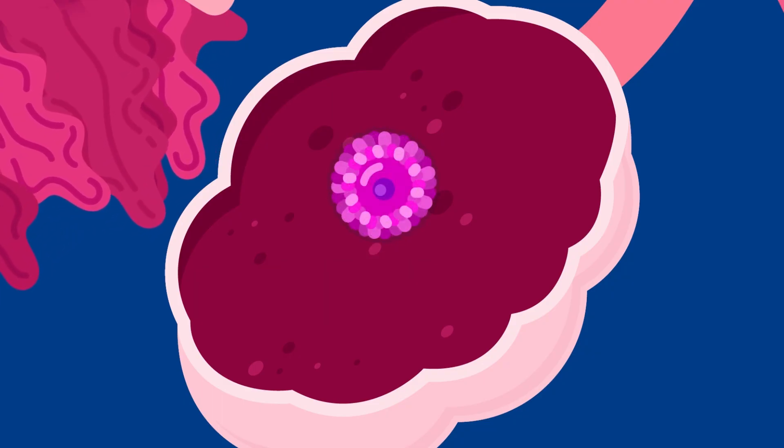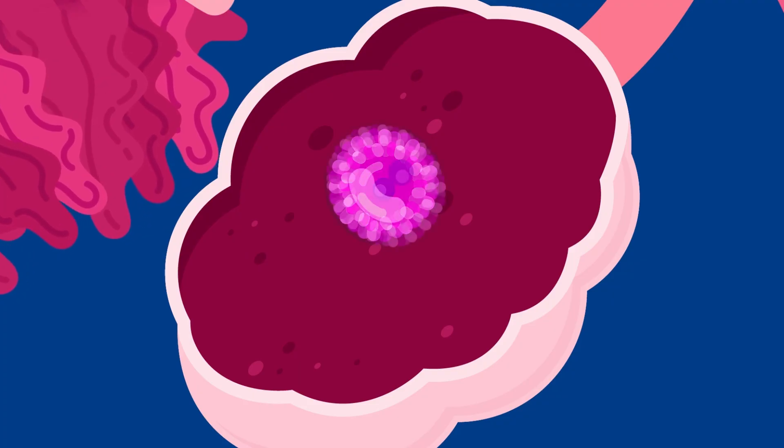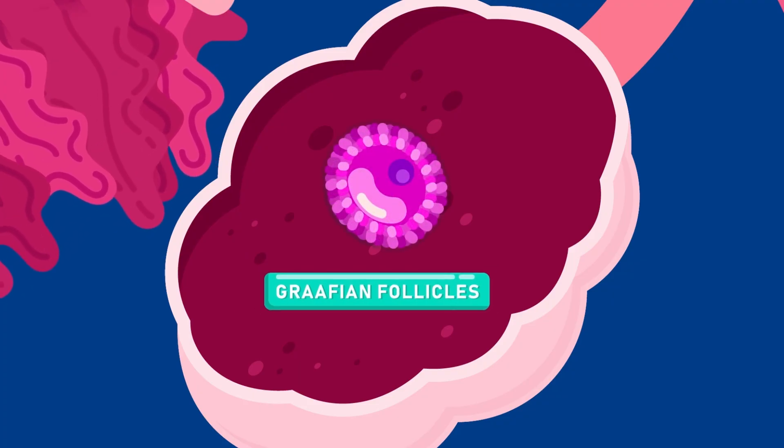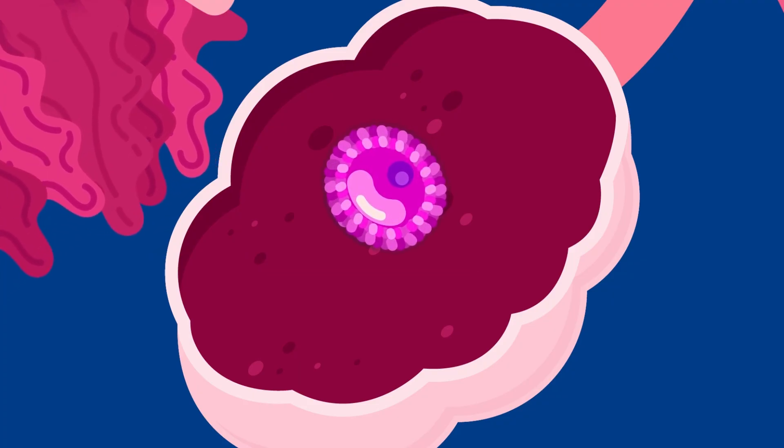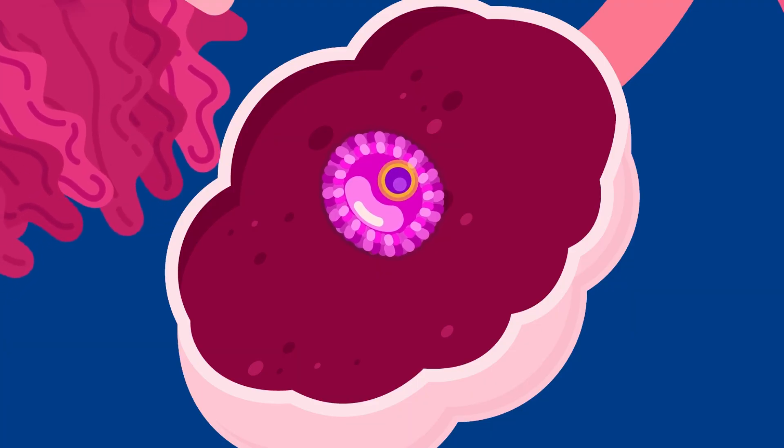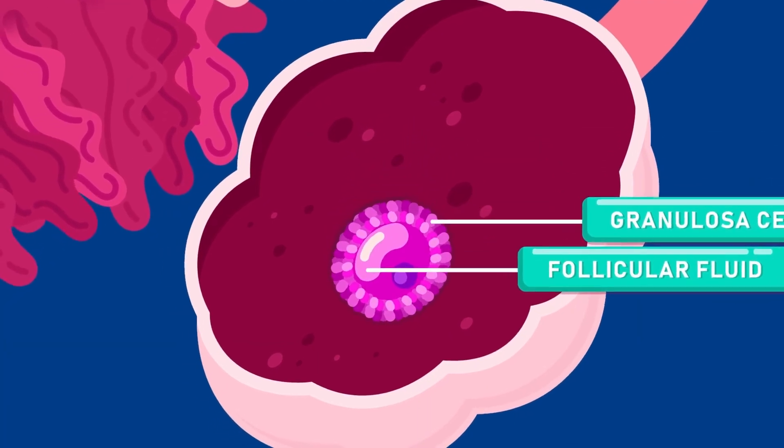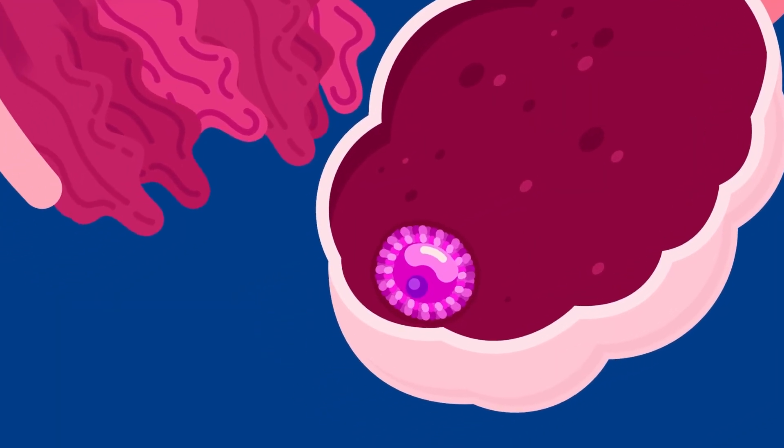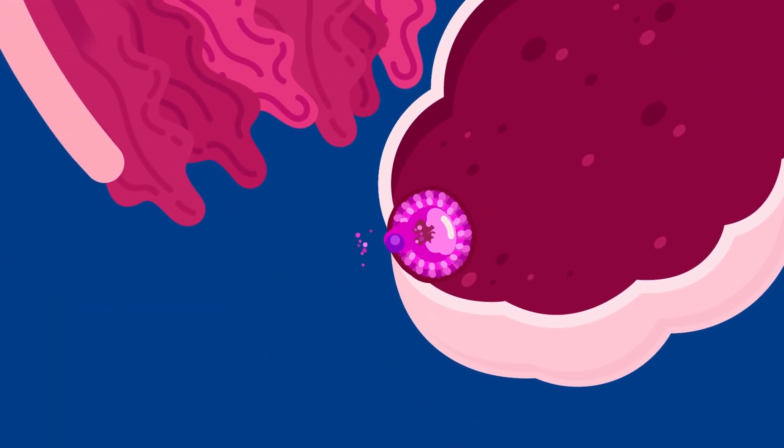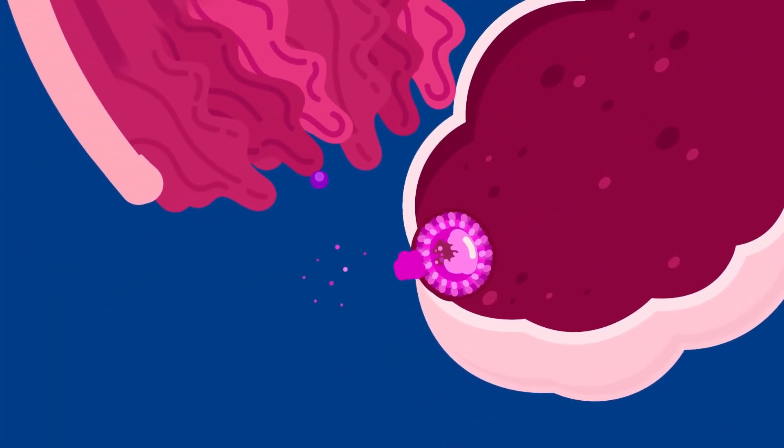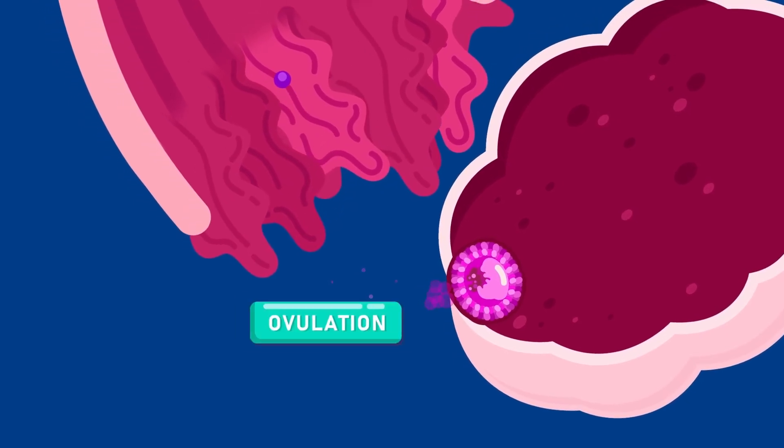The primary follicle may grow to maturity, and a mature follicle is known as a Graafian follicle. The Graafian follicle contains an egg surrounded by follicle cells and fluid-filled space. At about the 14th day from the beginning of menstruation, the Graafian follicle ruptures and releases the egg into the oviduct funnel. This is called ovulation.